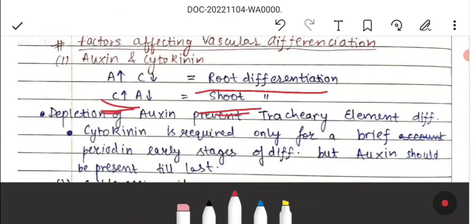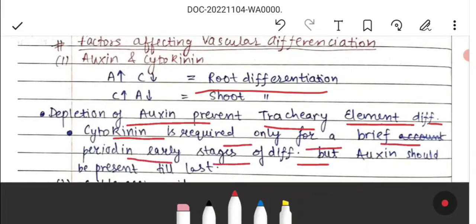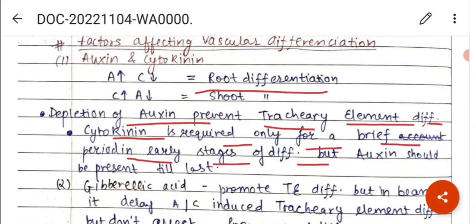If cytokinin is high, then shoot development will occur. Depletion of auxin prevents the tracheid element differentiation. Cytokinin is required only for a brief period in early stages of differentiation. But auxin has to be present till the end, in all stages.